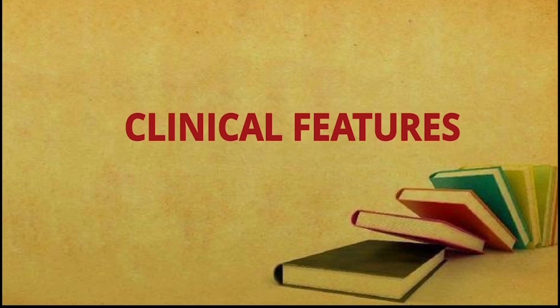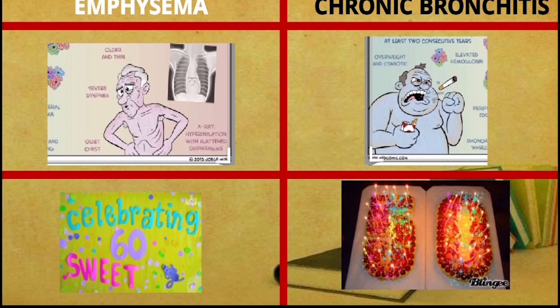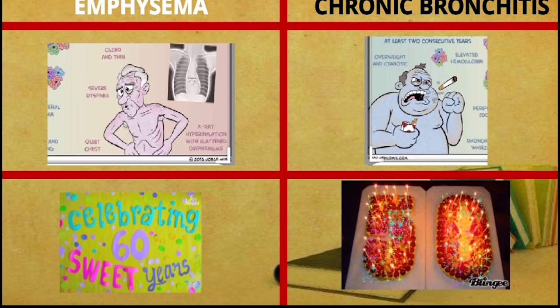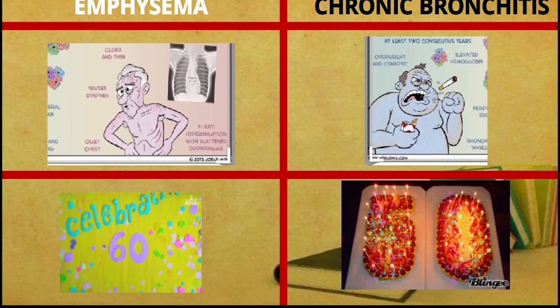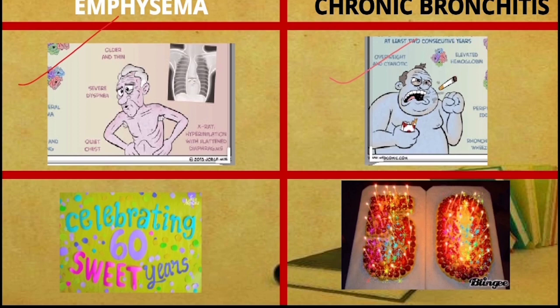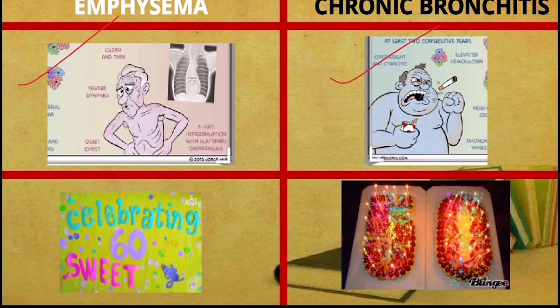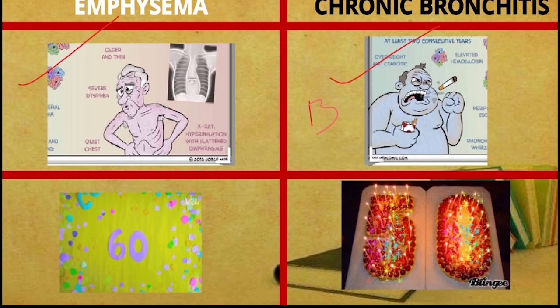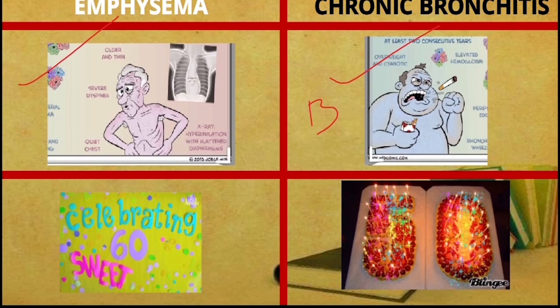Now I'll discuss clinical features. First, five important clinical features for exam purposes. In emphysema, people suffering are called pink puffers, and in chronic bronchitis they are called blue bloaters. To remember: blue bloaters has the letter B, and bronchitis also has the letter B — so blue bloaters corresponds to bronchitis, and pink puffers corresponds to emphysema.